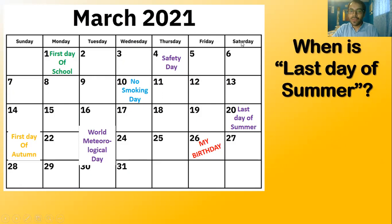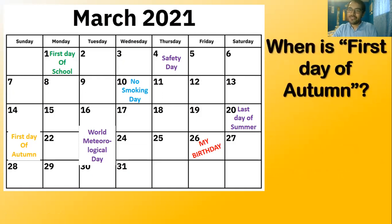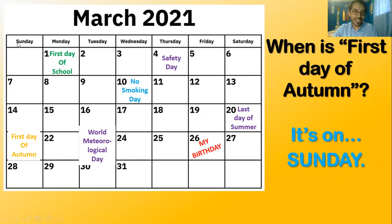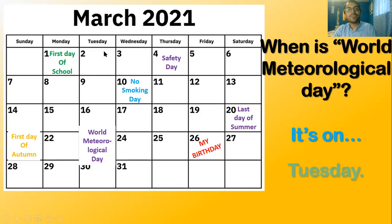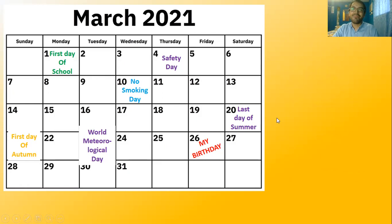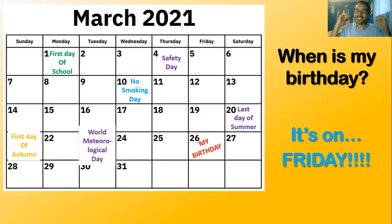When is the last day of summer? It's on Saturday. And the next day — when is the first day of autumn? It's on Sunday. When is world meteorological day? It is on Tuesday. And the most important question of all — when is my birthday? Today is my birthday! My birthday is on... Friday! Yes! Friday — it's on Friday!